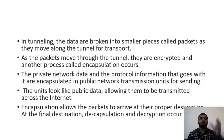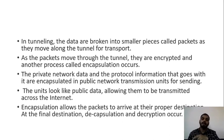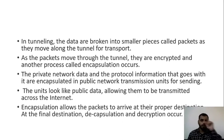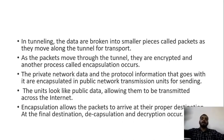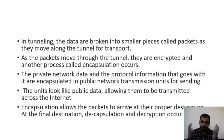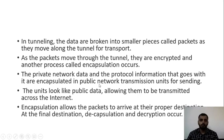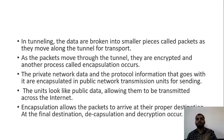As packets move through the tunnel, they are encrypted and a process called encapsulation occurs. Encryption means normal plain text, when combined with a key, becomes encrypted data. Encrypted data minus the key gives back plain text — that is decryption. Plain text plus key equals encryption; encrypted data minus key equals plain text. The data is first encrypted and then encapsulated or grouped together. The private network data and protocol information are encapsulated in a public network transmission unit for sending, making the packets appear local to that network.